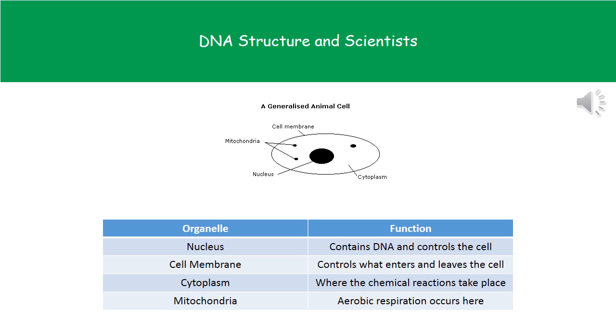The cell membrane controls what can enter and leave the cell. It's like a gateway, deciding what can go in or out at any given time. The cytoplasm is where the chemical reactions take place. Finally, the mitochondria is the site of aerobic respiration.